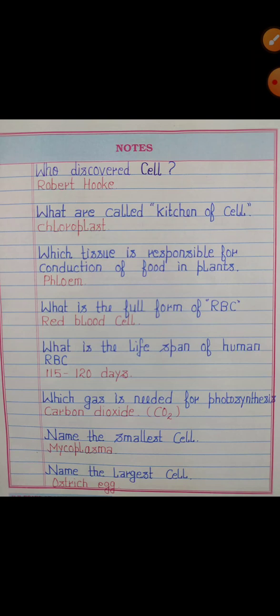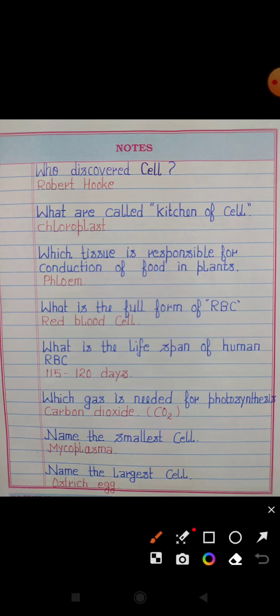Best of luck and let us start from the first question. Who discovered the cell? Answer: Robert Hooke. What are called the kitchen of the cell? Answer: Chloroplast.